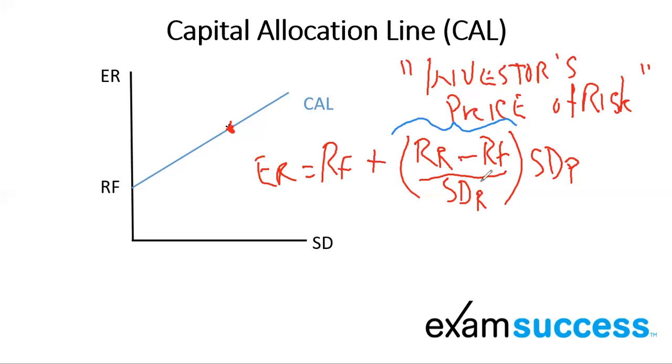This is the investor's price of risk. So make sure that we know this language and you can recognize this. Now, the other key point to be aware of, that gives a lot of candidates trouble, this standard deviation of the risky asset and the standard deviation of the investor's portfolio. What is the difference?